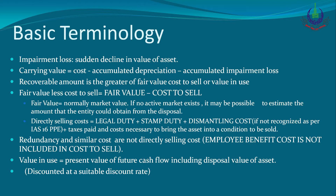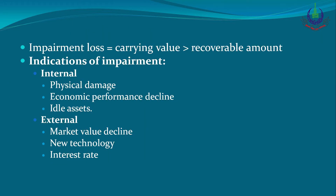Impairment loss exists when carrying value is greater than recoverable amount. Recoverable amount is the greater of fair value less cost to sell (FV-LCS) or value in use (VIU). The greater value is compared to the asset's carrying value. If carrying value is greater than recoverable amount, it means our asset is going to be impaired and an impairment loss exists.